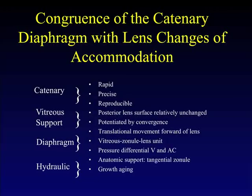The congruence of the catenary diaphragm with lens changes of accommodation I think is quite compelling. The catenary is rapid, precise, and reproducible. Vitreous support explains why the posterior lens surface doesn't change very much — the capsule at the back of the lens is much thinner than the anterior capsule. It explains why there is potentiation of accommodation by convergence of the two eyes, and it explains the translational movement forward of the lens. The diaphragm is really a vitreous-zonial-lens unit, and we have shown the pressure differential between the vitreous and the anterior chamber — fluid that simply moves around the lens as the lens tends to move forward.